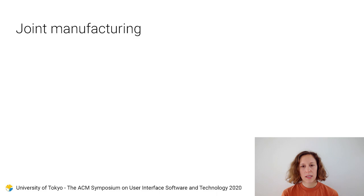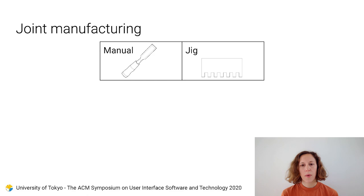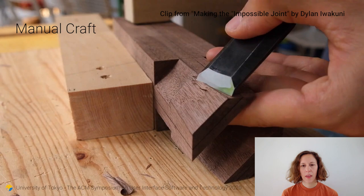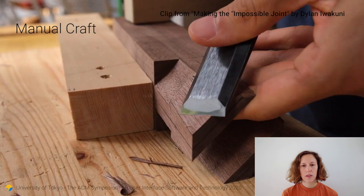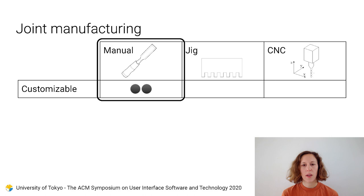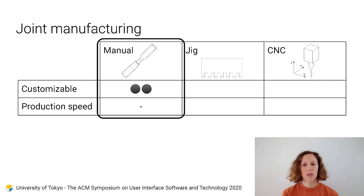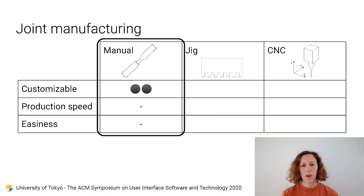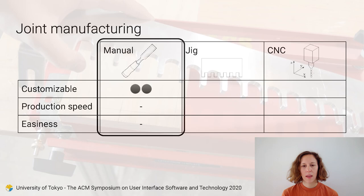How are wood joints normally manufactured? There are three common techniques: manual craft, power tools with jigs, and CNC milling. When manually crafting joints, there are not many geometrical restrictions, as humans have a large range of freedom of motion. Crafted joints are therefore highly customizable, but production speed is slow and it is very difficult. Crafting joints by hand is an art that can be mastered only after long training.